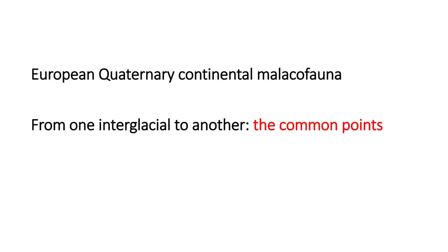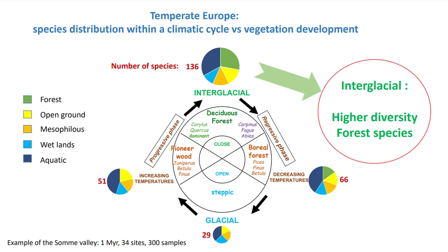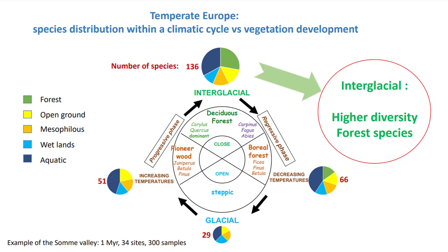First, I will speak about the common points of these interglacial malacofaunas. I have taken the example of the Somme Valley, which has been widely studied for a long time and provides a very nice record of the evolution of the malacological group over the last million years. Here, malacological taxa are distributed in different ecological groups and color groups, and plotted against the diagram of the vegetation evolution within a climatic cycle defined by palynologists. What is characteristic of interglacial malacofaunas is the very high diversity and the presence of forest species.